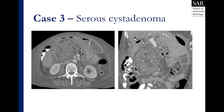To illustrate a point: serous cystadenomas can grow quite large and cause symptoms. This is a patient who had been followed for several years with a serous cystadenoma that slowly grew to become quite large in the right mid-abdomen. This is a pancreatic head serous cystadenoma with coarse calcifications visible on the axial and coronal post-contrast images. The patient developed chronic abdominal pain and eventually the surgeons performed a Whipple procedure, and the patient did quite well.